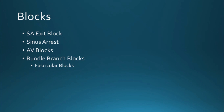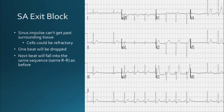The blocks we'll cover are: SA exit block, sinus arrest, AV blocks, bundle branch blocks, and fascicular blocks — also called hemiblocks. A sinoatrial block occurs when the impulse leaving the SA node is not conducted in the atria and subsequently not conducted in the ventricles, or is delayed. A reason for this could be that the cells are refractory. The rhythm will be regular except at the area of the exit block, with one P wave for every QRS. There will be one beat dropped, and the next beat occurs in sync with the original rhythm, so the R-to-R interval remains the same across the whole rhythm strip.